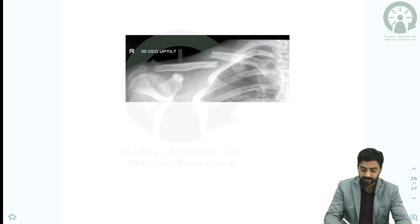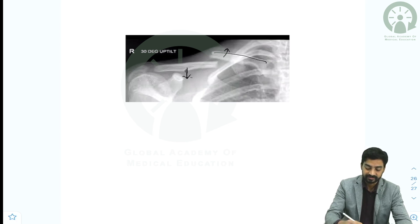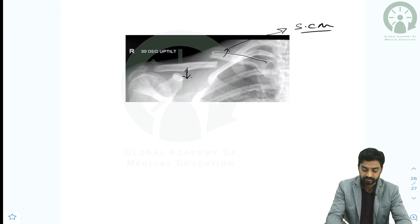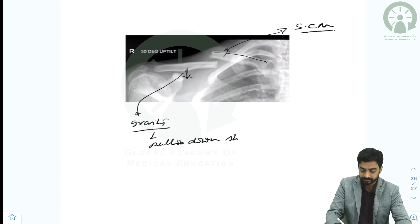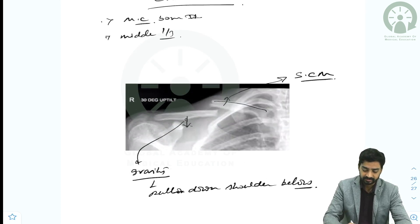There is a clavicle fracture, and you can clearly see the displacement. The medial part of the bone is displaced upward, and the lateral part is downward. Why does it happen? Because of the direction of pull of sternocleidomastoid muscle attached to it, and the distal part is pulled down because of gravity, which pulls the shoulder below.